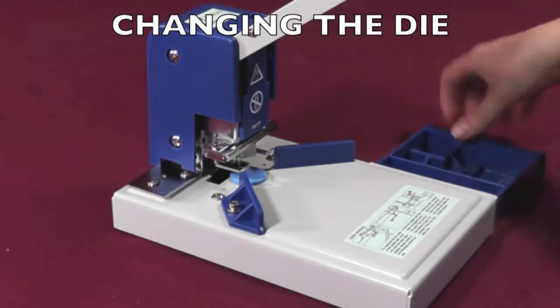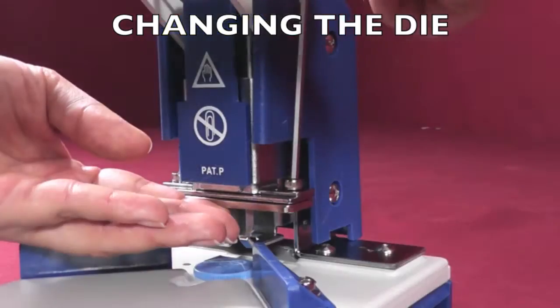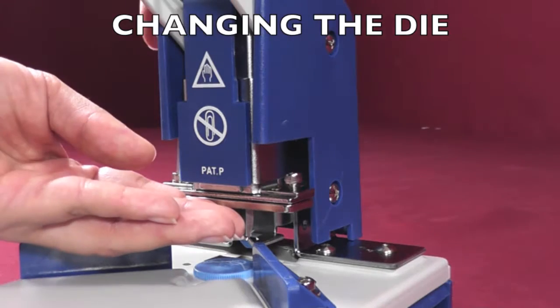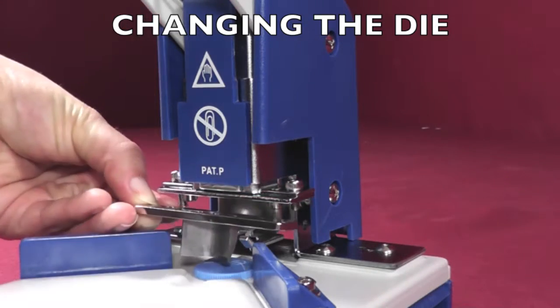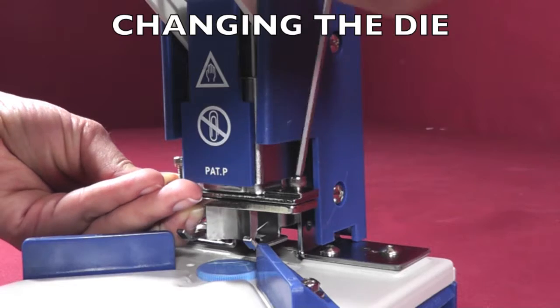To change the die, simply use the tool provided in the toolbox to unscrew the two screws on either side, then screw in the desired die.